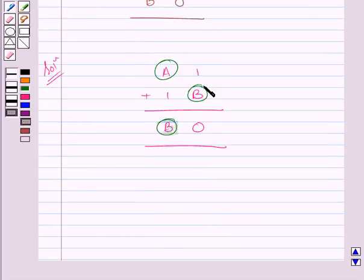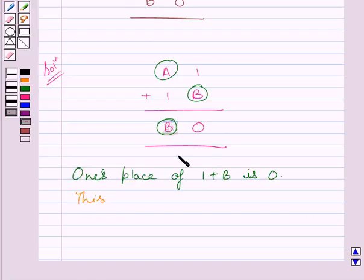Now clearly you can see, 1's place of 1 plus B is 0. This happens only when value of B is 9. You know that sum of 9 and 1 is 10, and 1's place of 10 is 0.